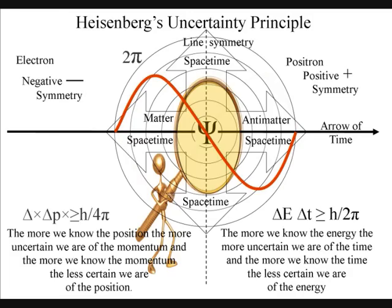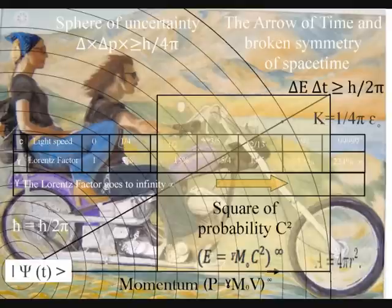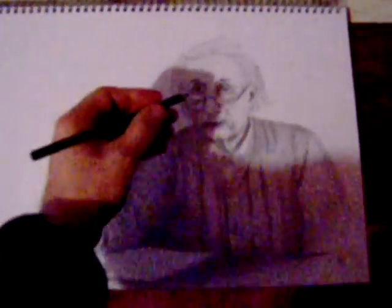Therefore, Heisenberg's uncertainty principle is the same uncertainty we have with any future event, and the probability wave function represents a physical process that forms the flow of time that we can interact with, turning the possible into the actual.